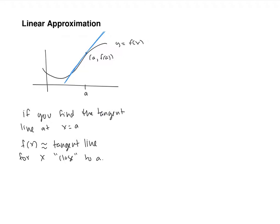The idea is that if you're sort of close-ish to A, the tangent line and the function are close-ish together. It's for any kind of curve, but how close you have to be depends on which curve you're looking at. If the curve is almost a line, you can maybe be close enough with a bigger window.